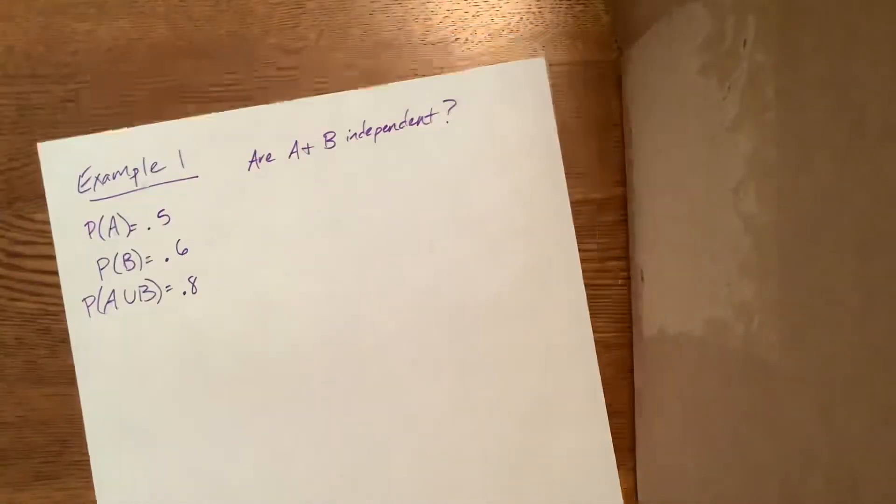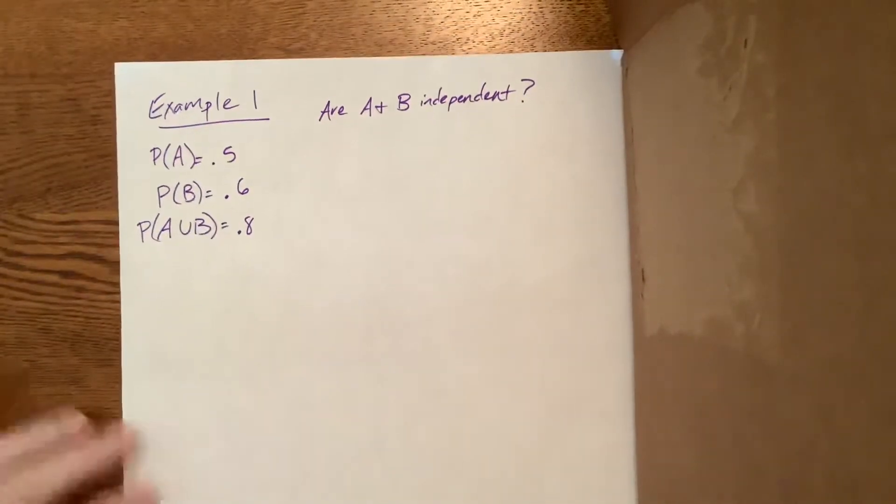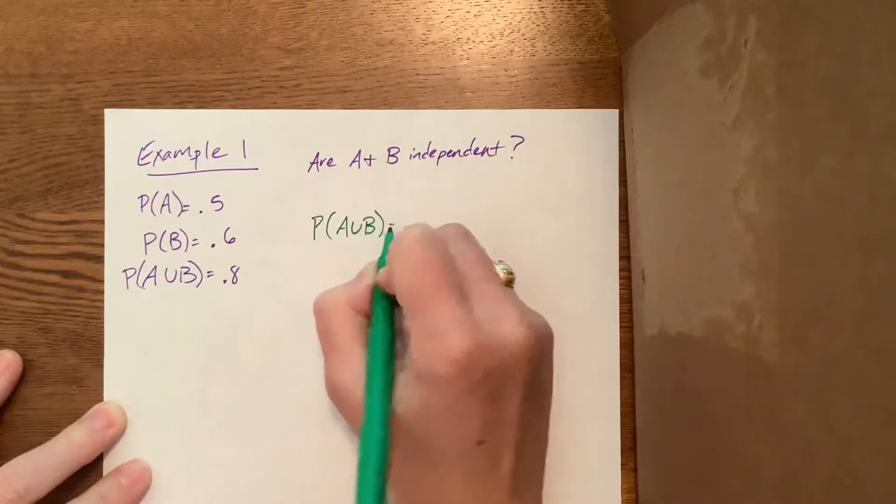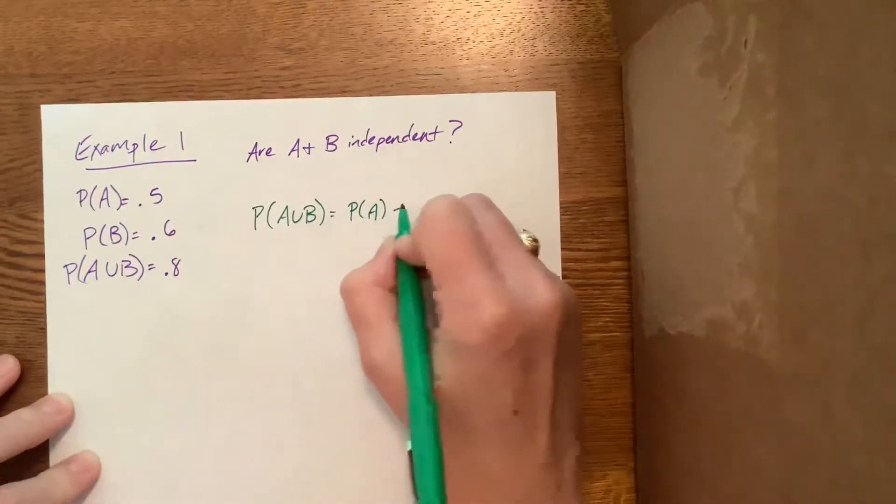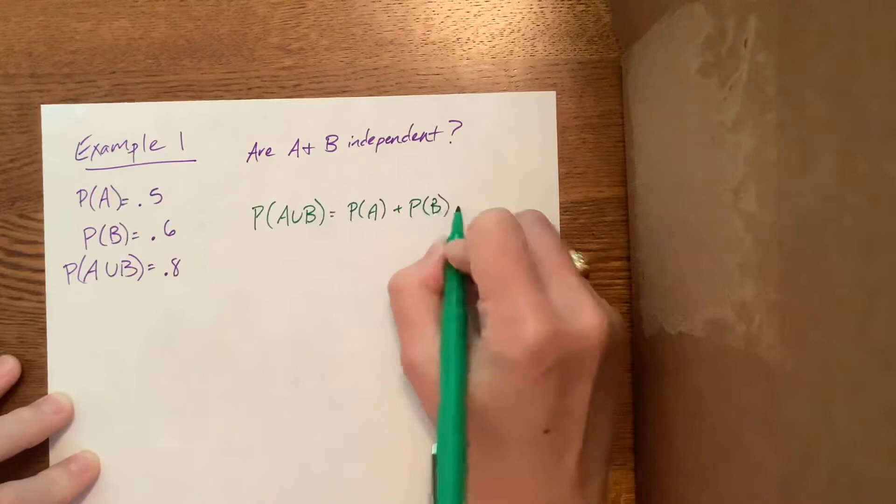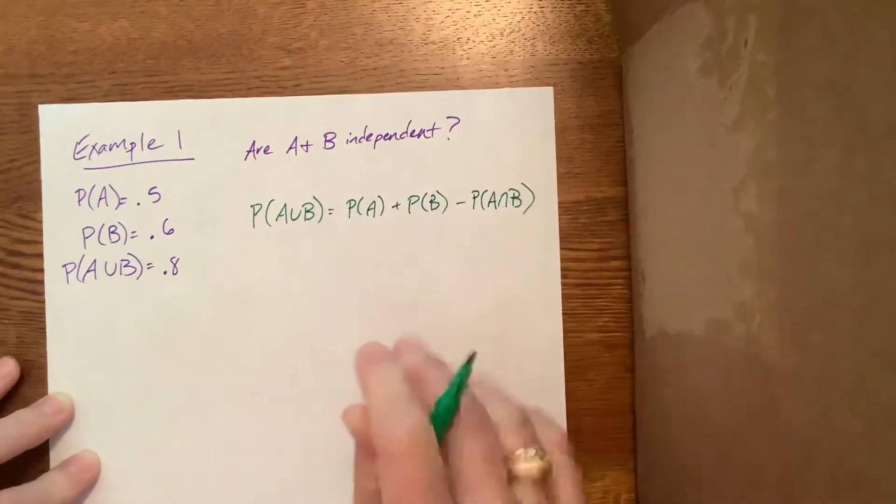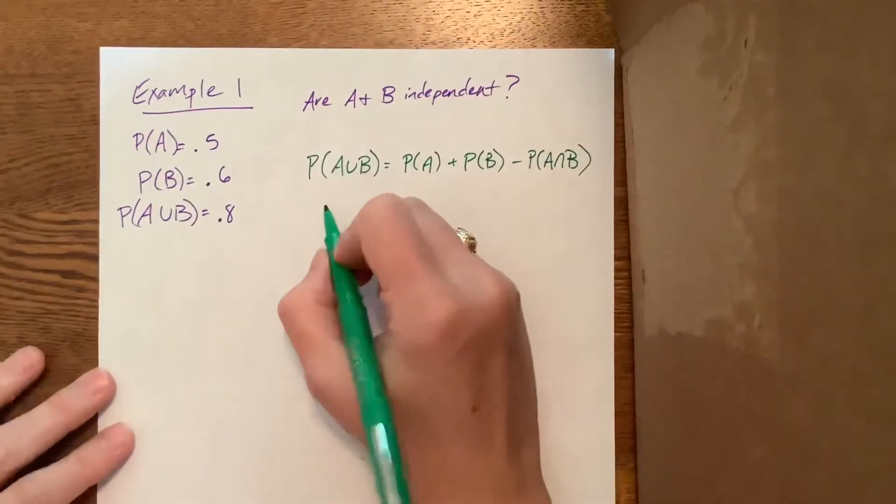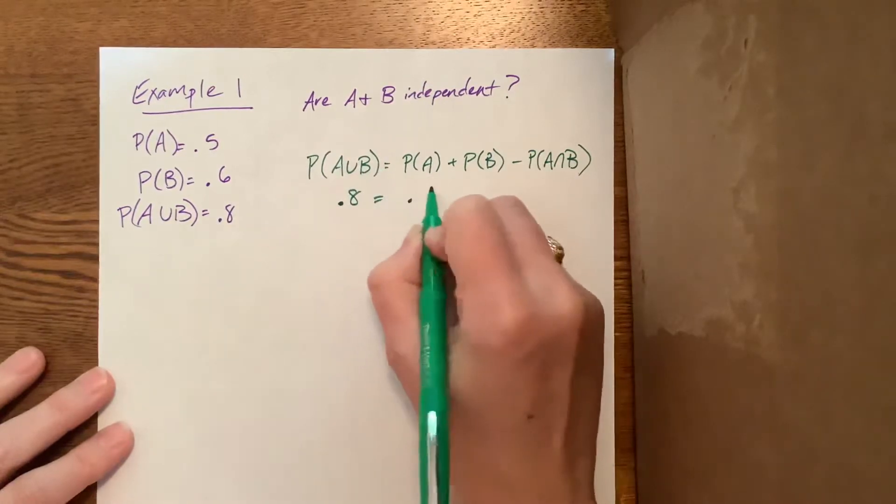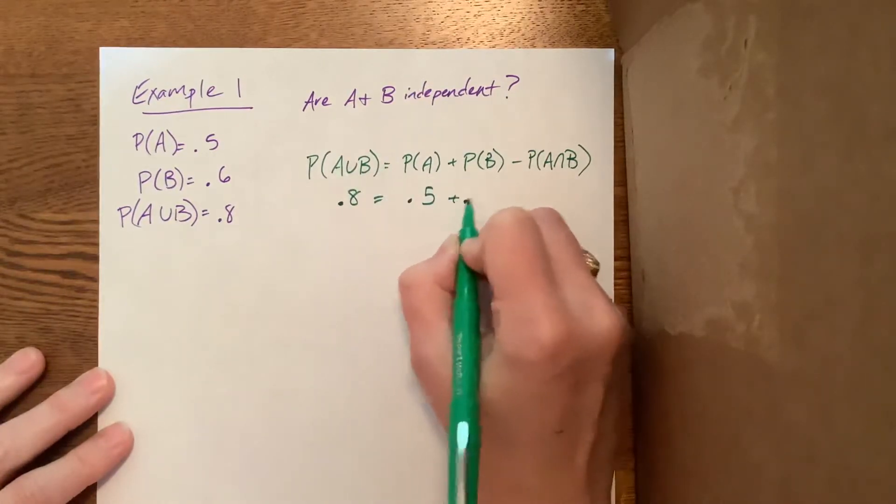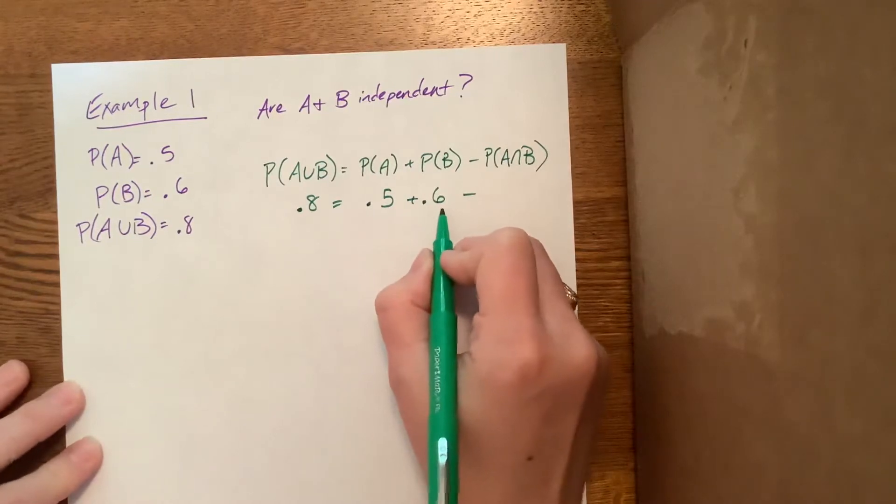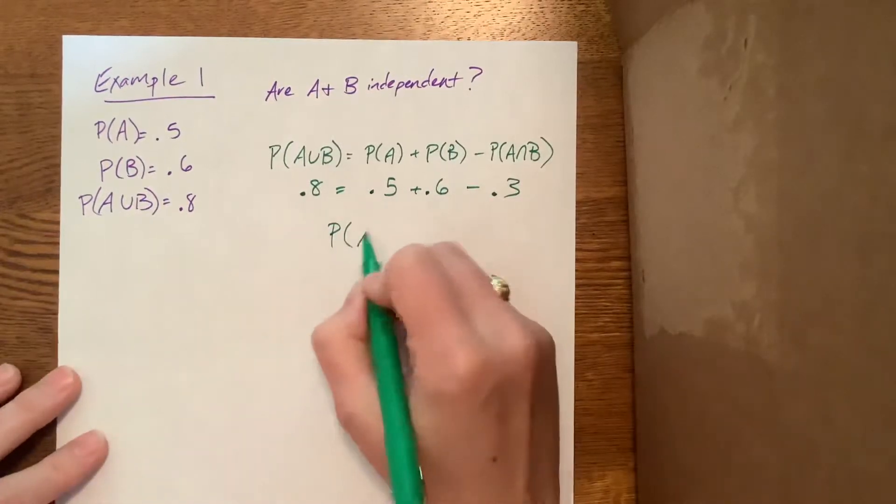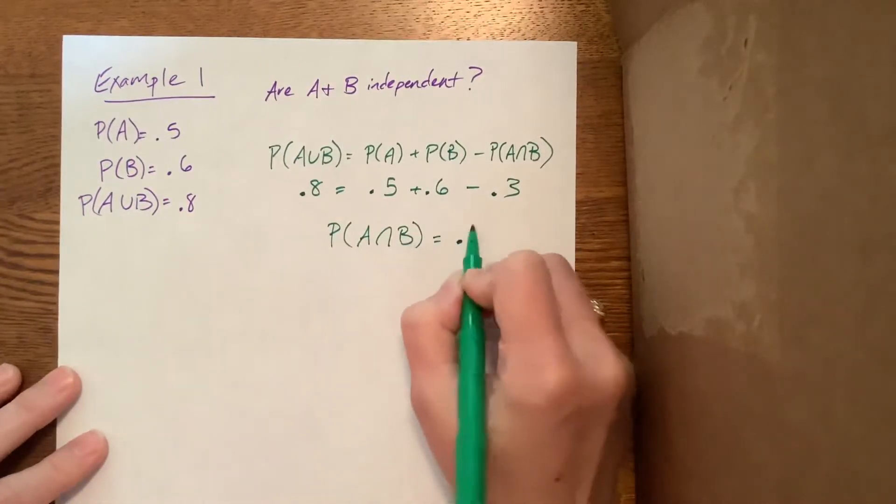So I have two examples. First one here, A, B, and A union B. Keep in mind, the probability of A union B is equal to the probability of A plus the probability of B minus the probability of their intersection. Let's just plug in the pieces that we know. A union B is 0.8, A is 0.5, B is 0.6. That's 1.1, so 1.1 minus 0.8 is 0.3. So the probability of A intersect B is equal to 0.3.